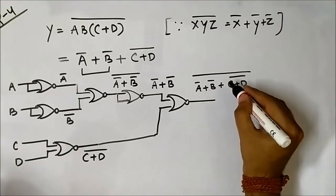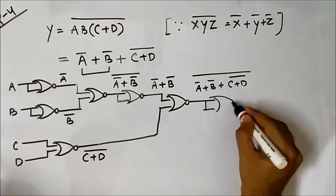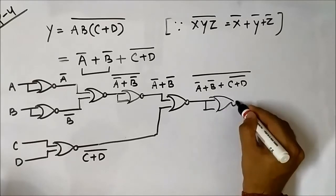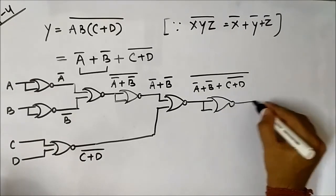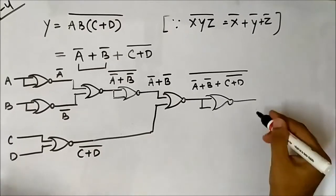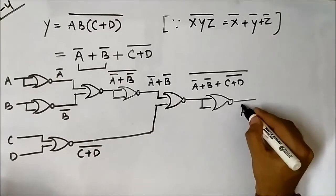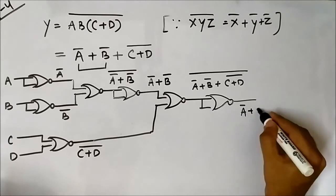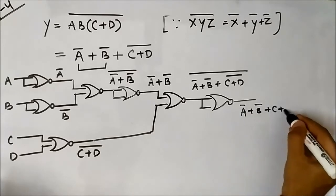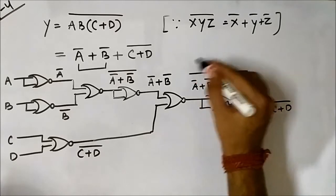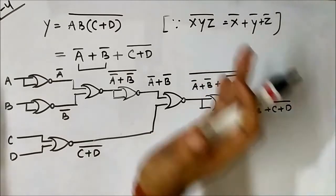That NOR gate gives us (A complement OR B complement OR C plus D complement) whole complement. If we pass that through another NOR gate, it gives us A complement plus B complement plus C plus D complement, because the complement of the complement gets removed.